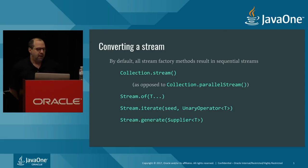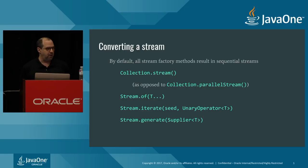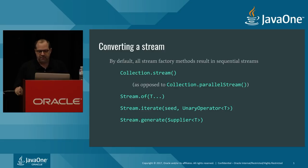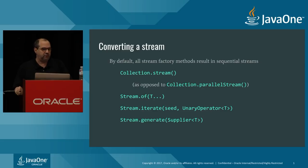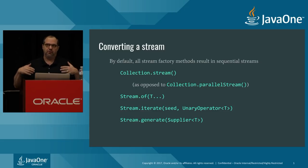These are the factory methods — the mechanisms we use in Java to create streams. There's the stream() method added as a default method on Collection. There's the of() factory method used in many classes in Java 8. There's iterate(), which takes a seed and a unary operator providing successive values. And there's generate(), which takes a supplier invoked repeatedly. All of those by default produce sequential streams.